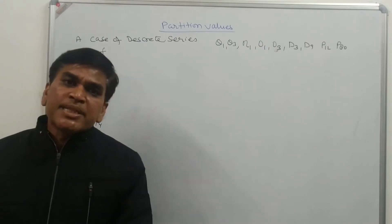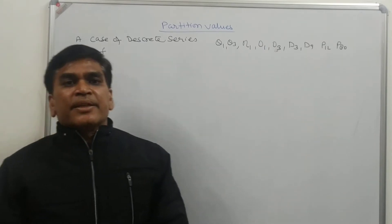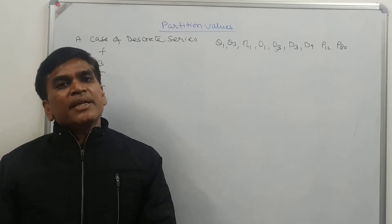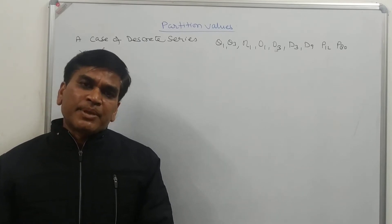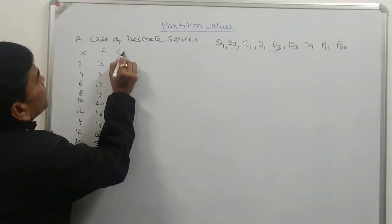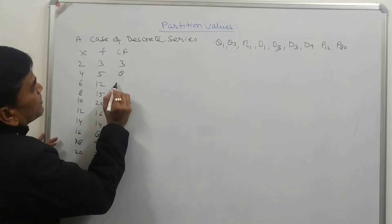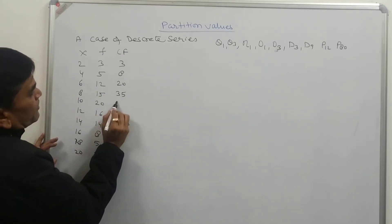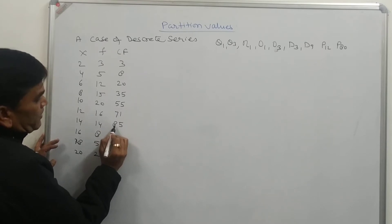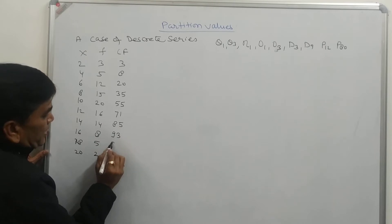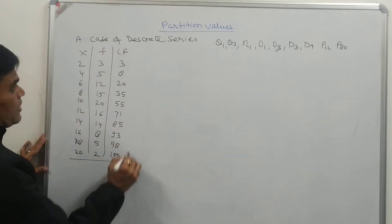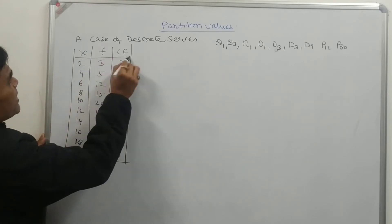It's very simple — it is more easy than in individual series. Whenever we are calculating the median value in discrete series, the very first thing we calculate is the cumulative frequency. Similarly, in this case also, we first calculate the cumulative frequency. The CF values are: 3, 8, 20, 35, 55, 71, 85, 93, 98, and 100.